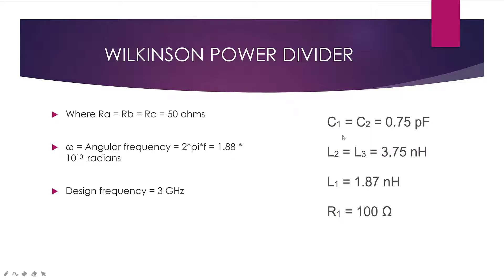The capacitor values, C1 and C2, are going to be 0.7 picofarads. L2 and L3 for inductance are going to be 3.75 nanohenrys. Inductor 1, L1, is going to be 1.8 nanohenrys. And R1, the resistor, equals 100 ohms. So these are the values we need to design the lumped element model of the Wilkinson power divider.